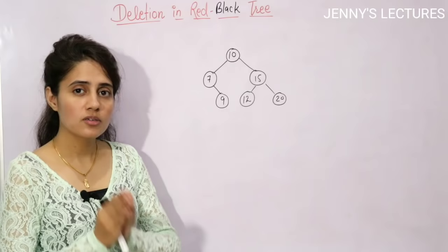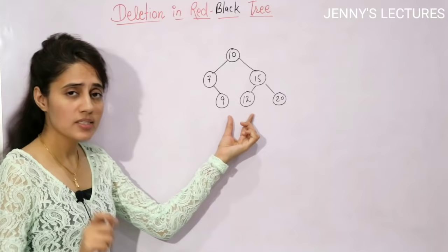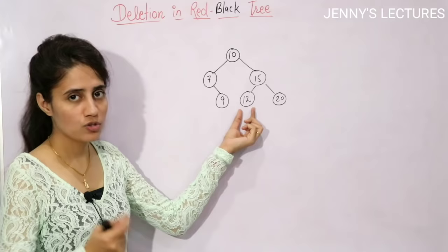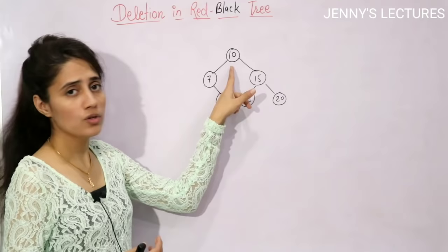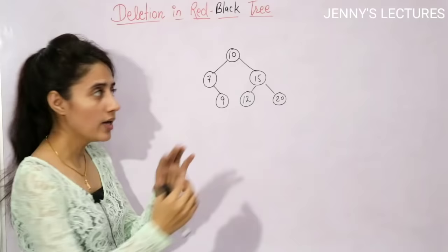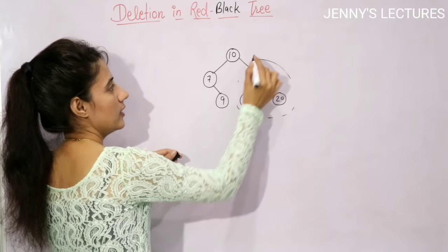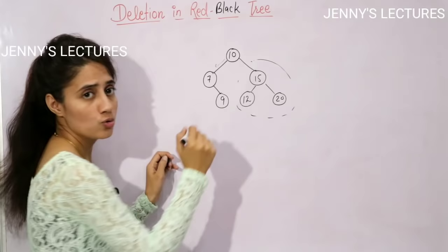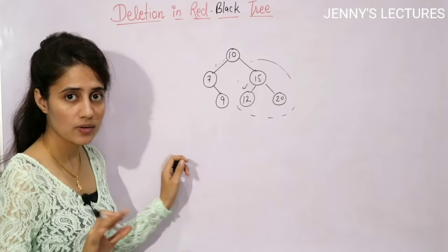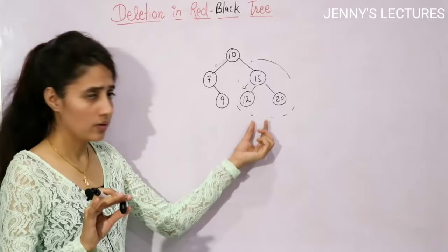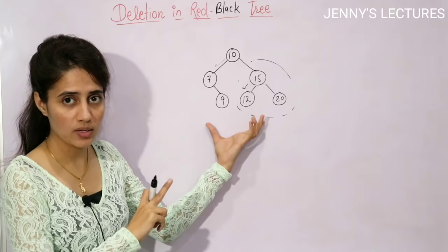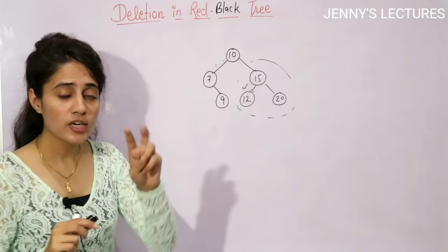In BST deletion, suppose you want to delete 12. Start from the root, search: 12 is greater than 10, go right; 12 is less than 15, go left — found 12. If the node has no children, simply delete it.